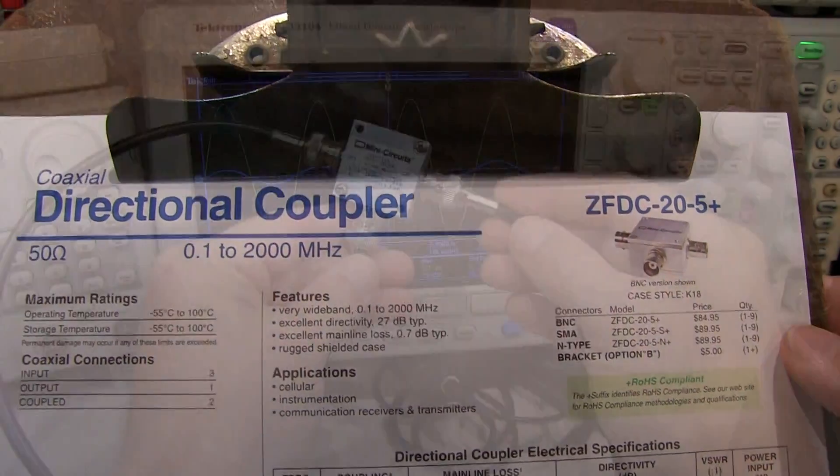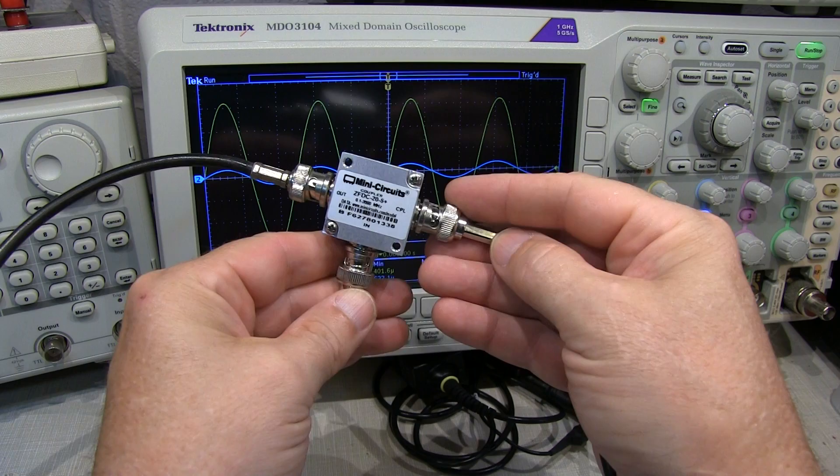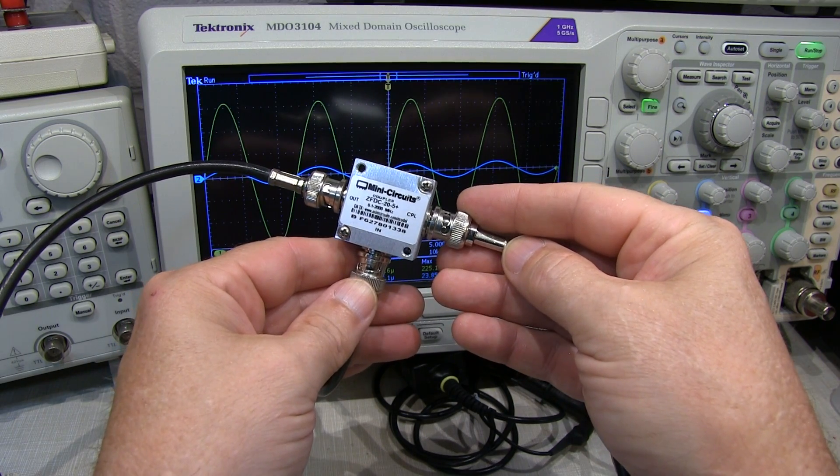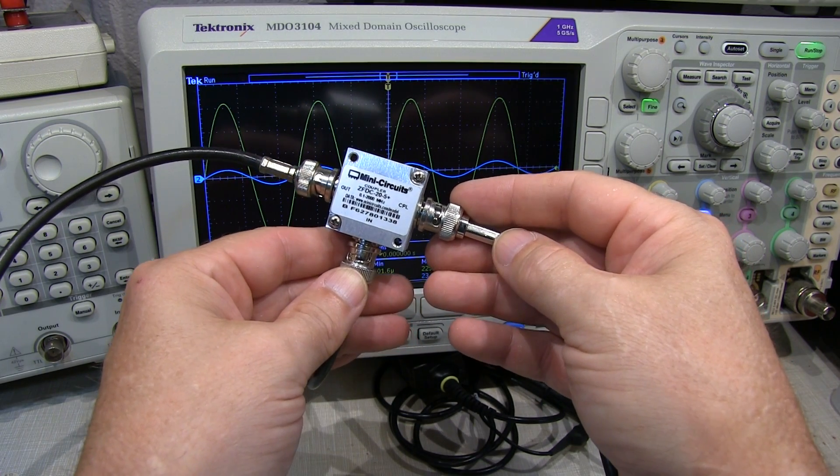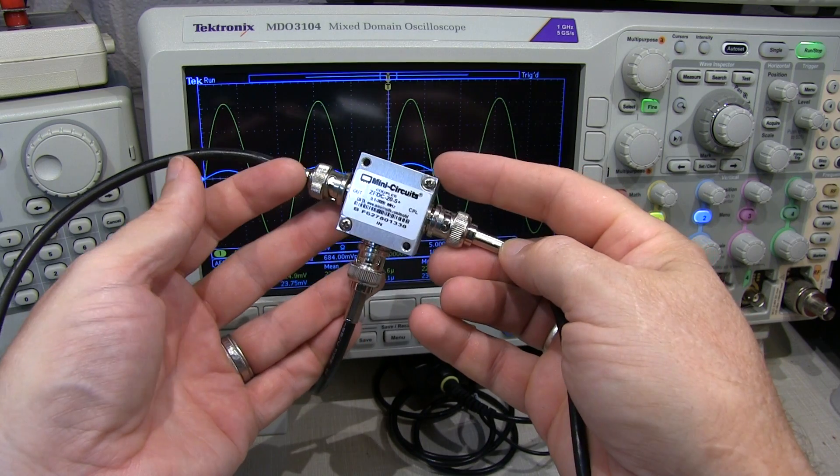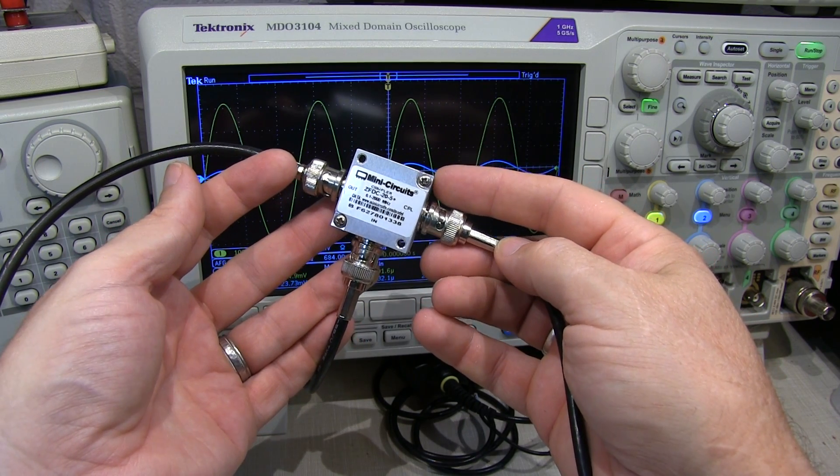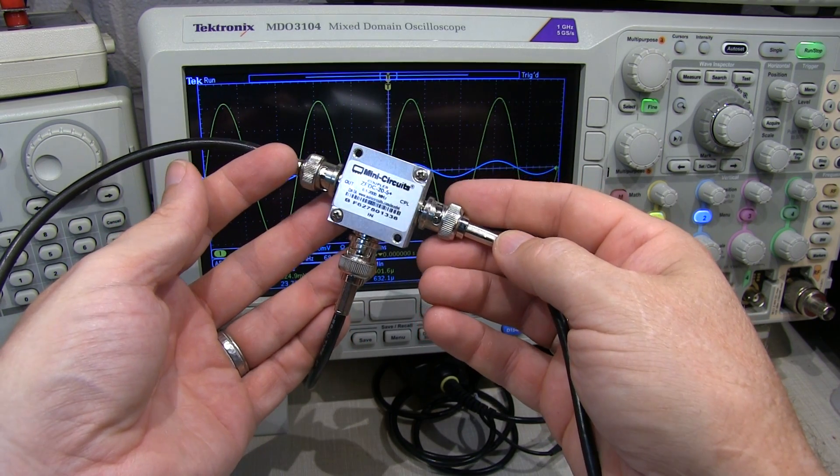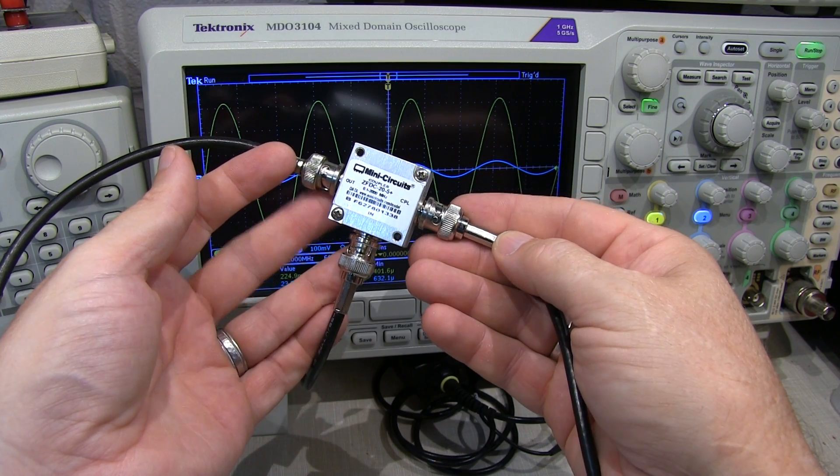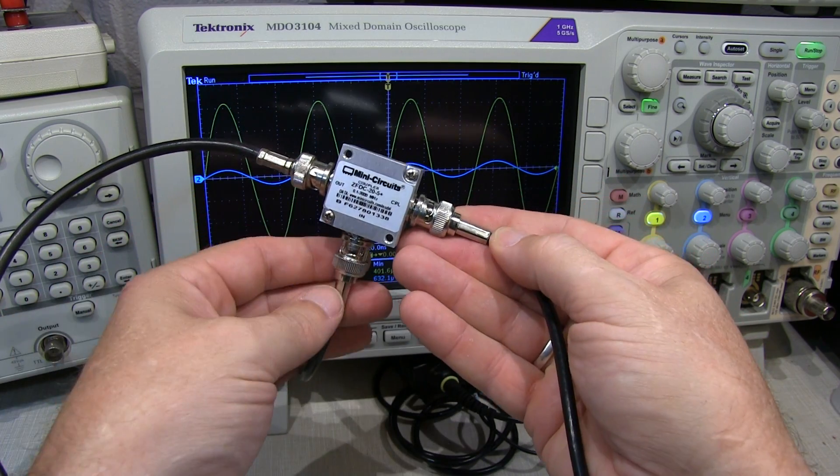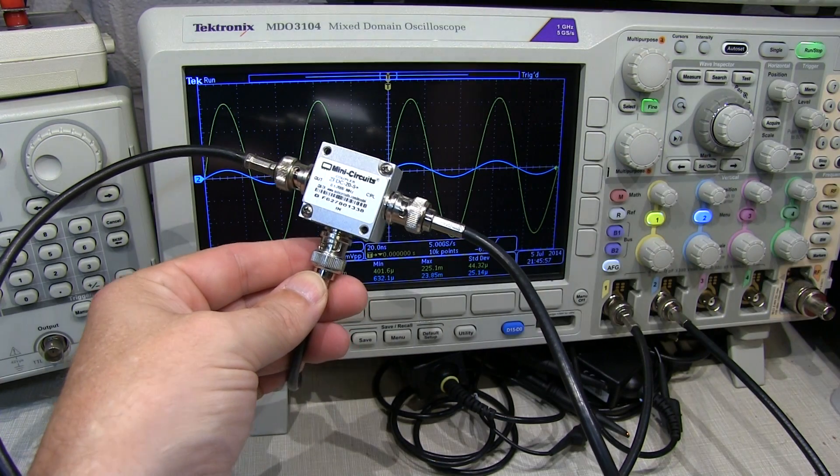and how to interpret the specifications. The unit I have here is from MiniCircuits, model ZFDC-20-5+. This is the device right here. So let's take a look at what a directional coupler is, and look at some of the specifications and what they really mean when we go and hook it up to a circuit, what does it actually do.